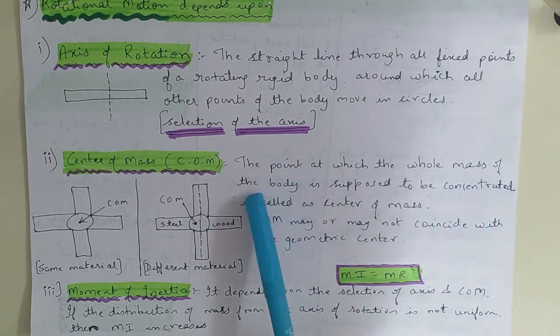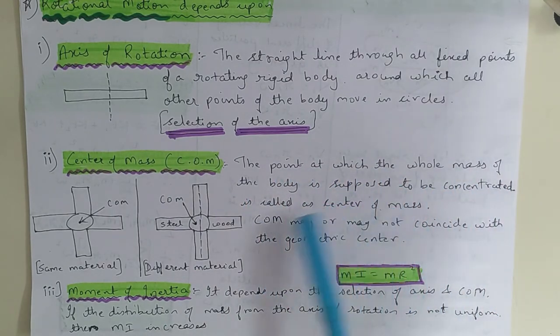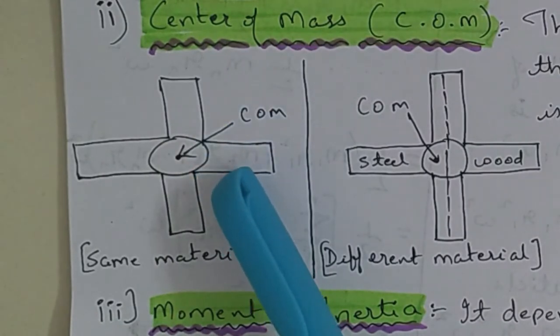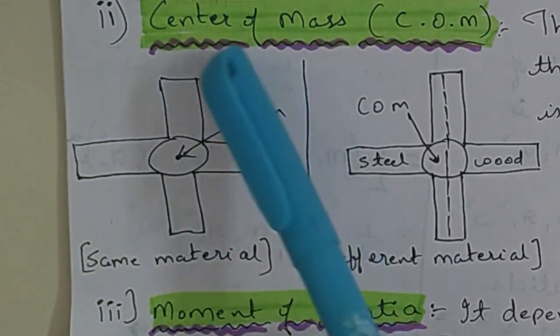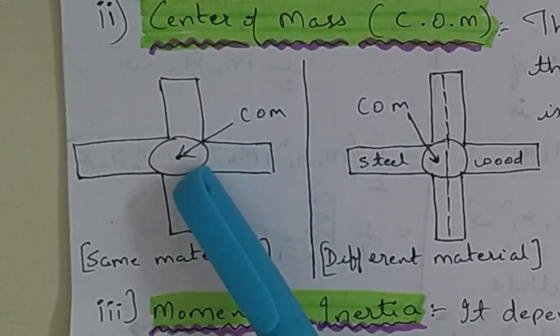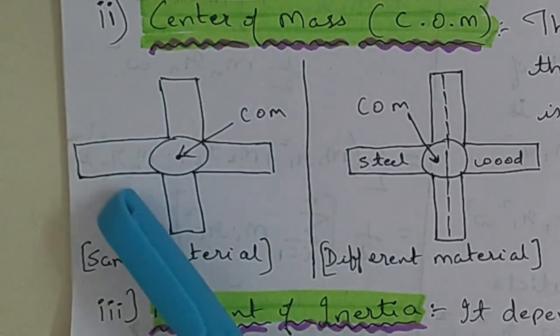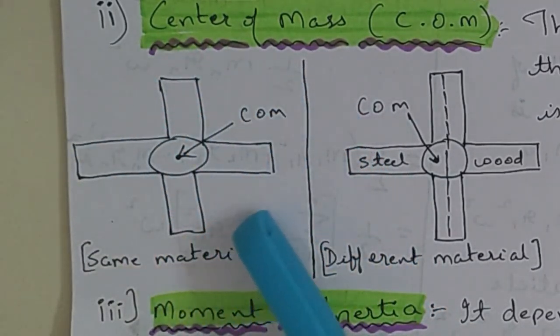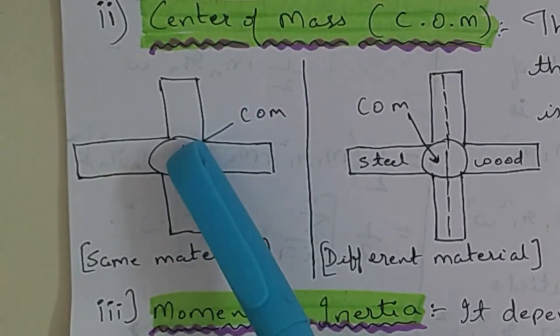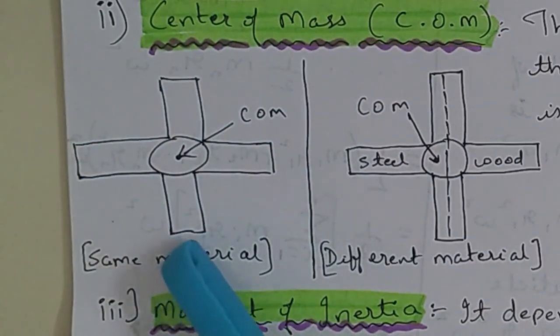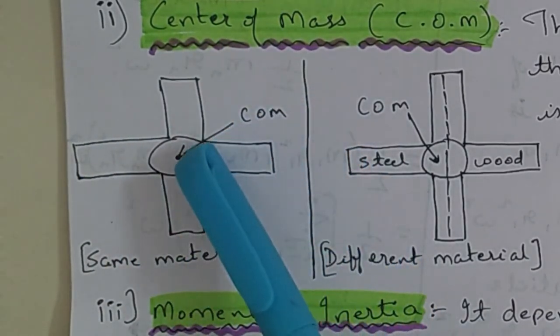What is center of mass? The point at which the whole mass of the body is supposed to be concentrated is called as center of mass. I have made two diagrams for your understanding. In this first diagram, this is an example of a fan - a fan with four blades. The fan's geometric center will be here. Even if you can see, if the fan is made up of a single material, then what will happen is that its center of mass will coincide at the center itself.